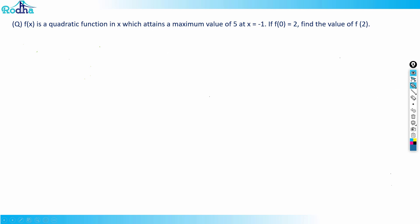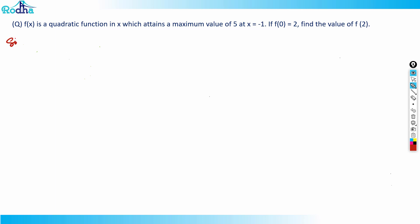Okay, hi guys, so let's look at this question here. A very good question to solve and must-know concepts are here. So 2 or 3 must-know concepts. See this question: f(x) is a quadratic function in x which attains a maximum value of 5 at x equal to minus 1. If f(0) equals 2, find the value of f(2).